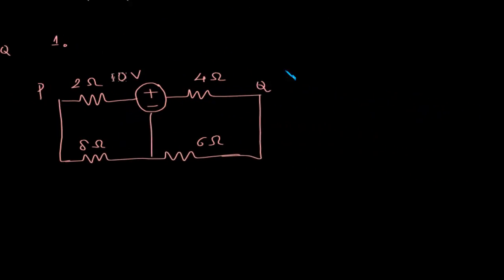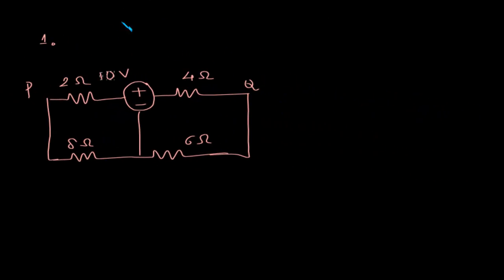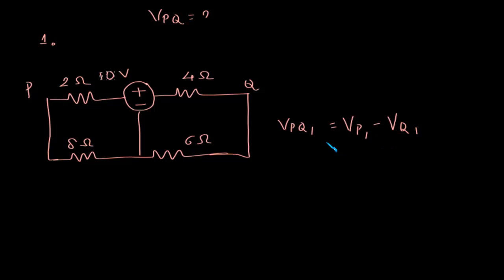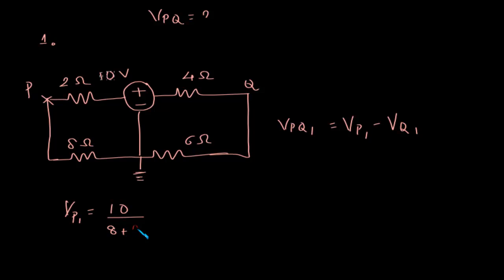We need to find out the voltage difference between P and Q, that is vpq. For case one, we will assume the voltage to be vpq1, and we have to find vp1 minus vq1. For vp1, we have 10 volts across the 2 ohm and 8 ohm series combination. Let's say this node is grounded.